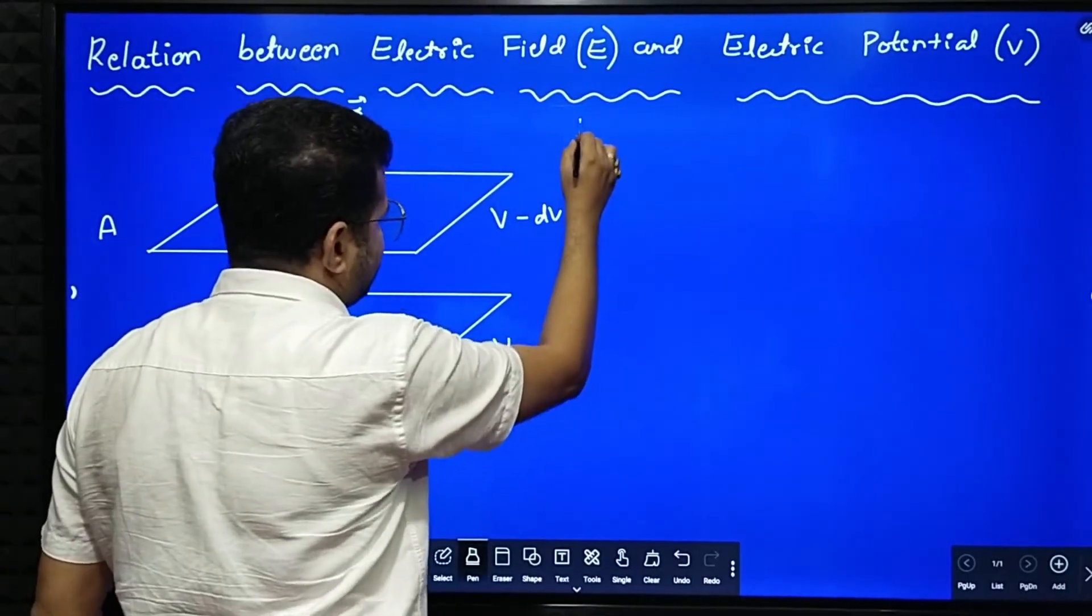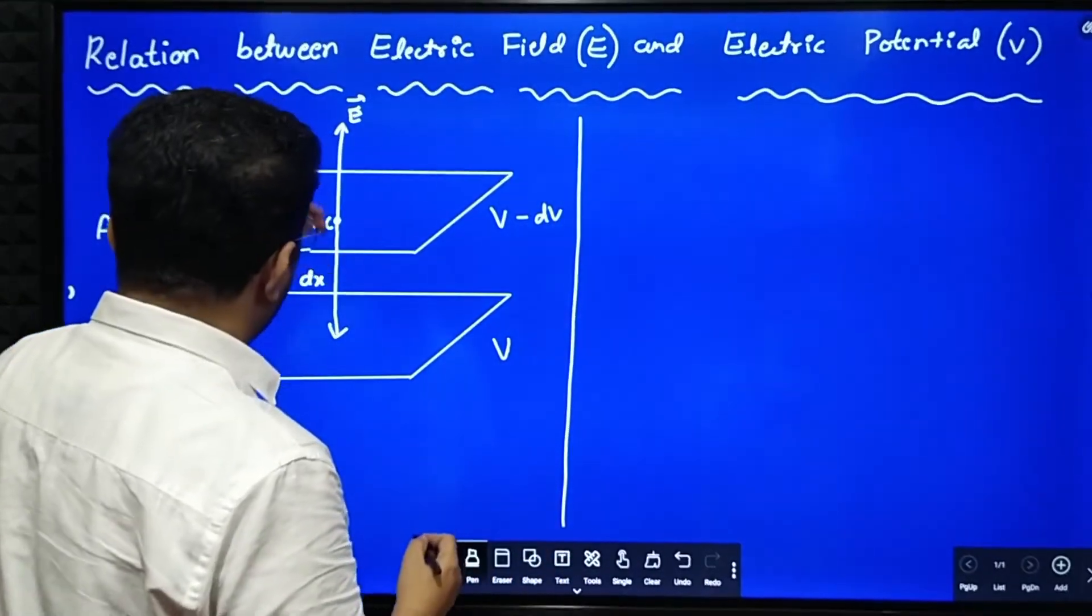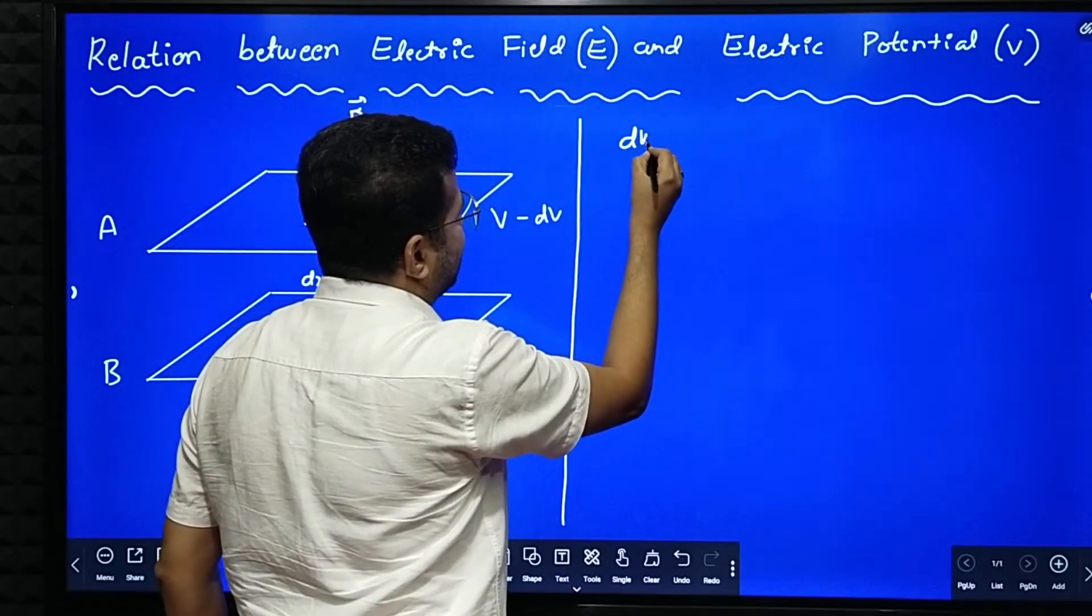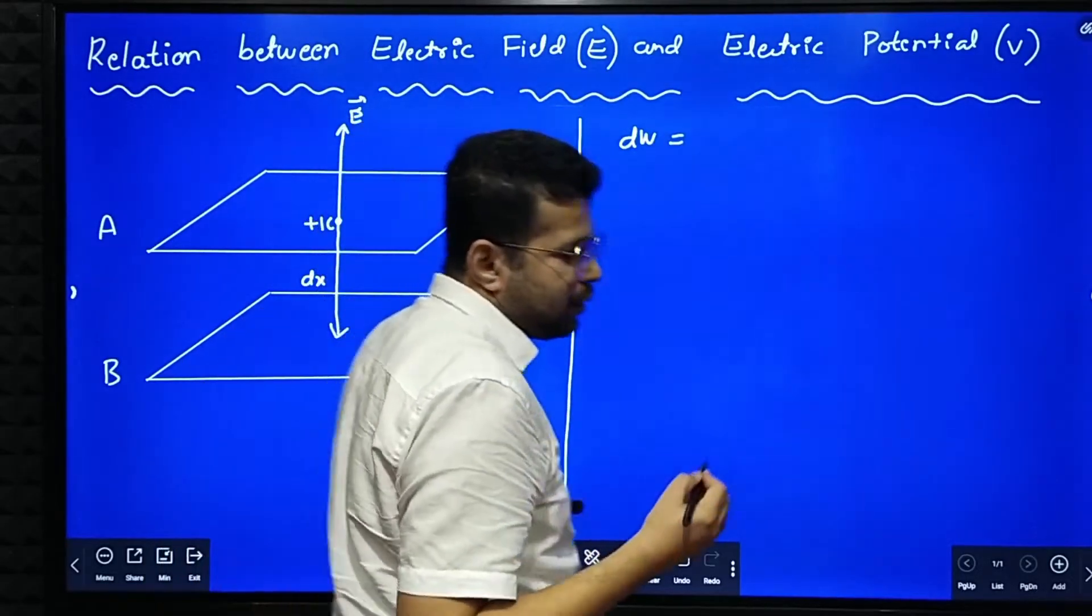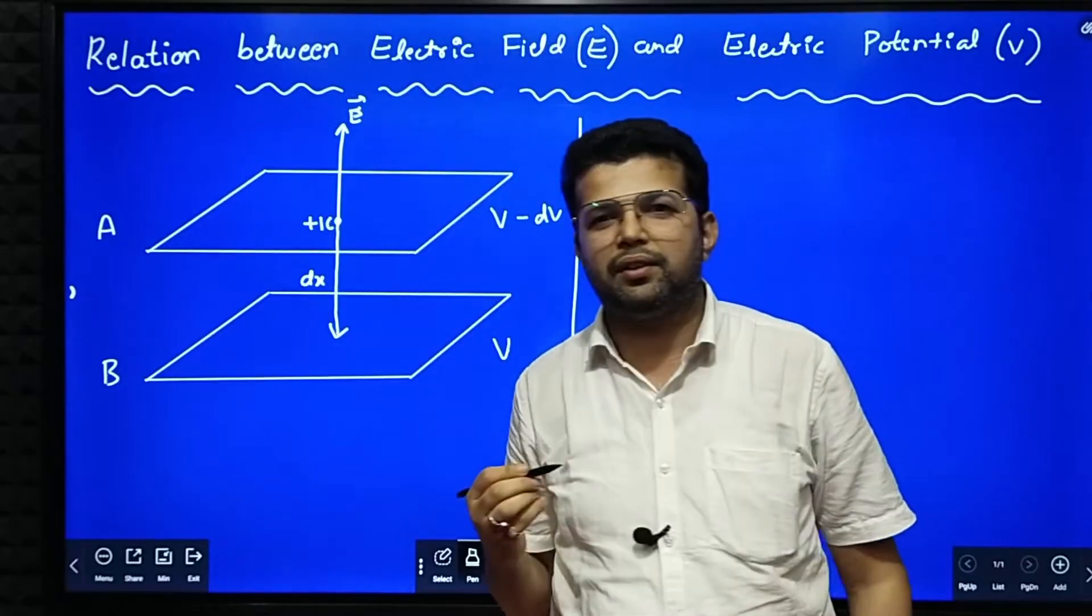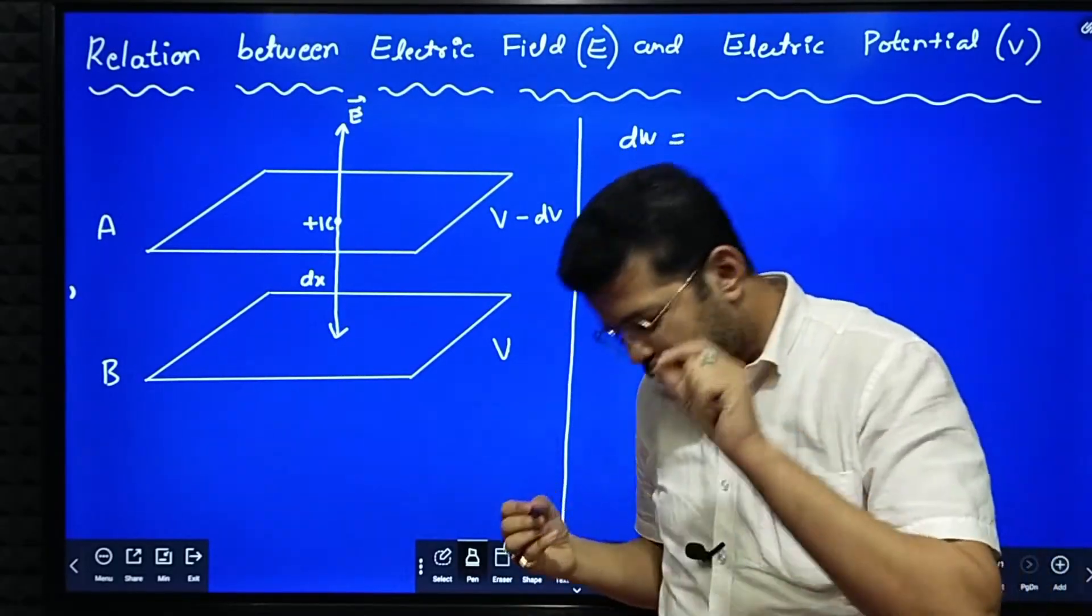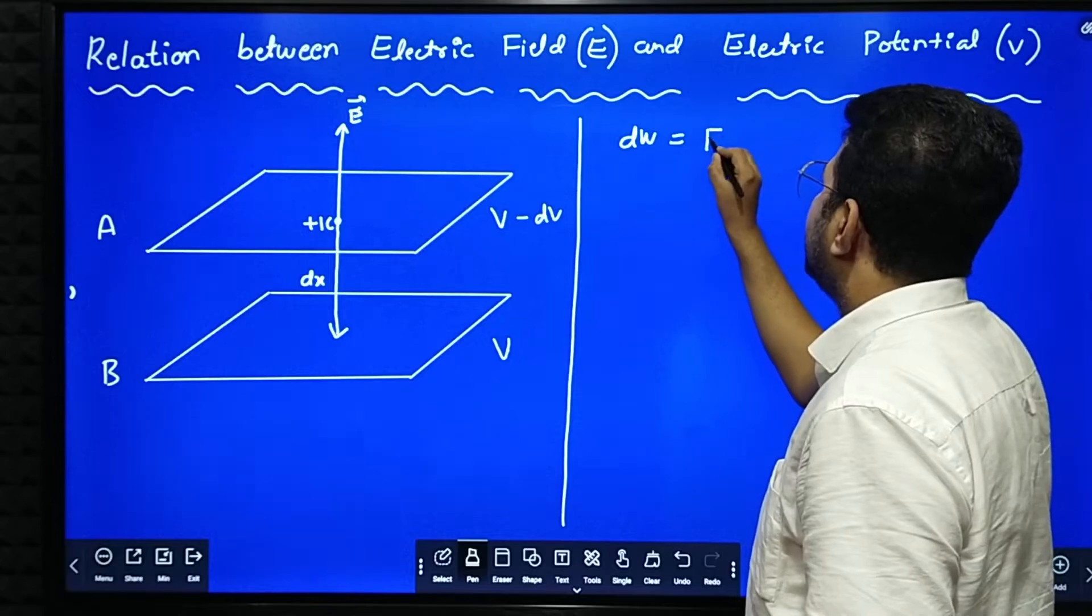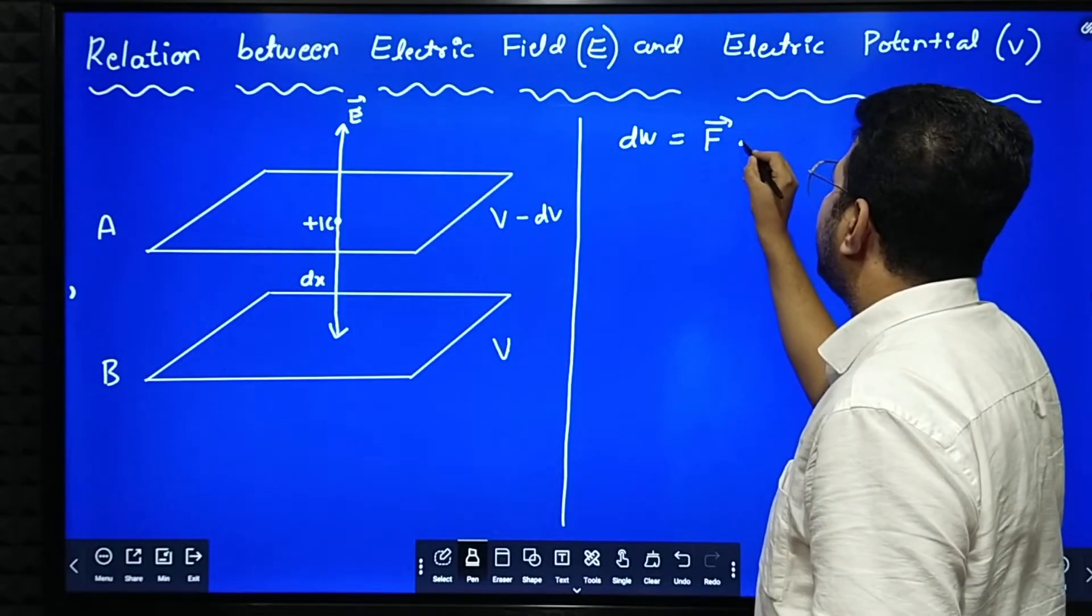Then in that case, what is the work done in this process? That small work done dW, because the separation between two equipotential surfaces is very very small, that is dx. So that small work done dW is equal to, basically it is a dot product of force and displacement F dot dx.